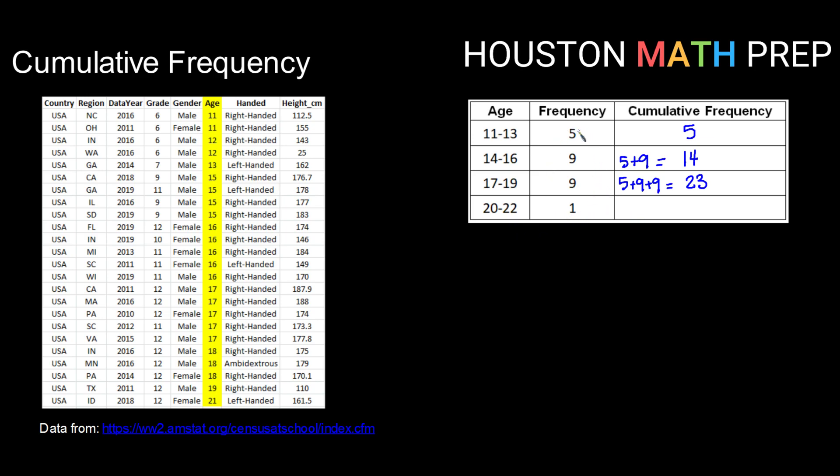So if we add up all the frequencies from that class and each one below it, we should get 24, which is what we expect. We should always here get our sample size. So the cumulative frequency for your last class should always equal your sample size.